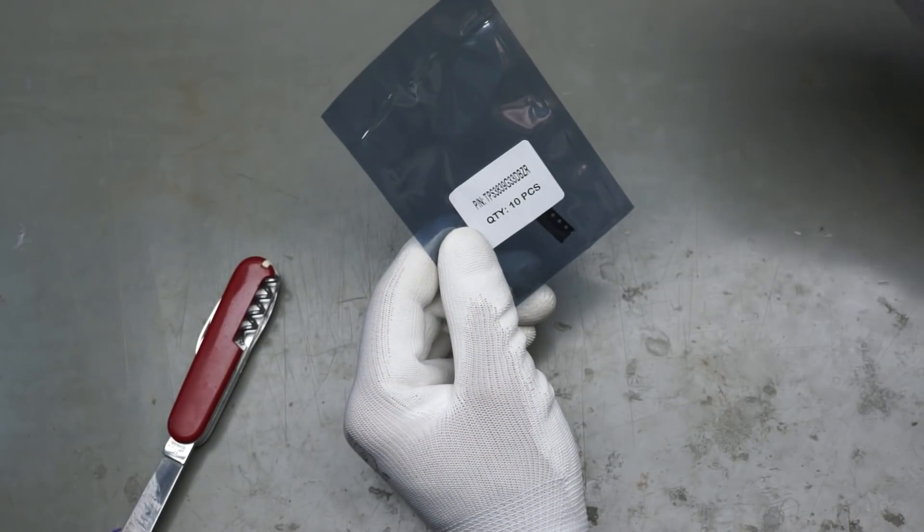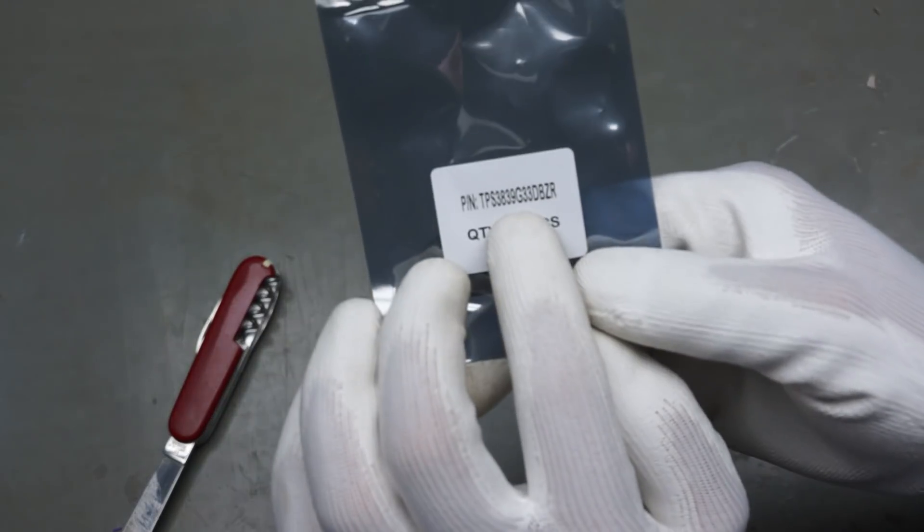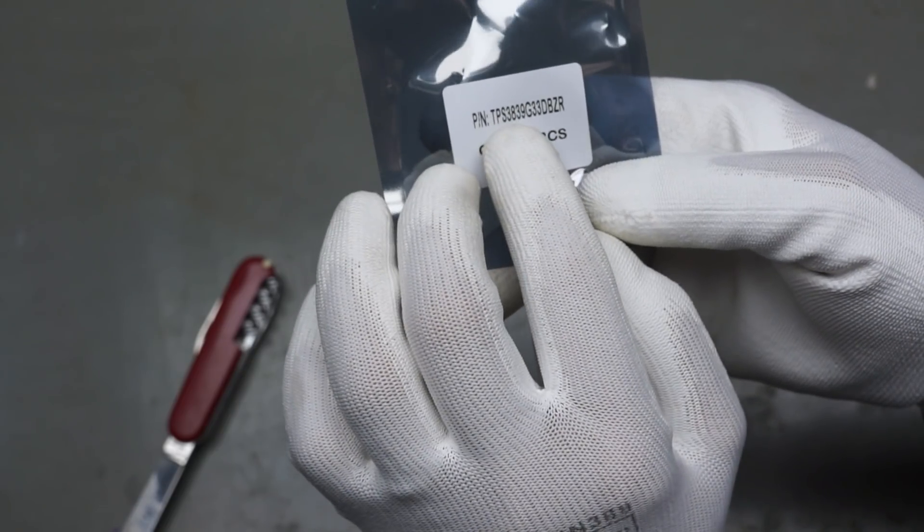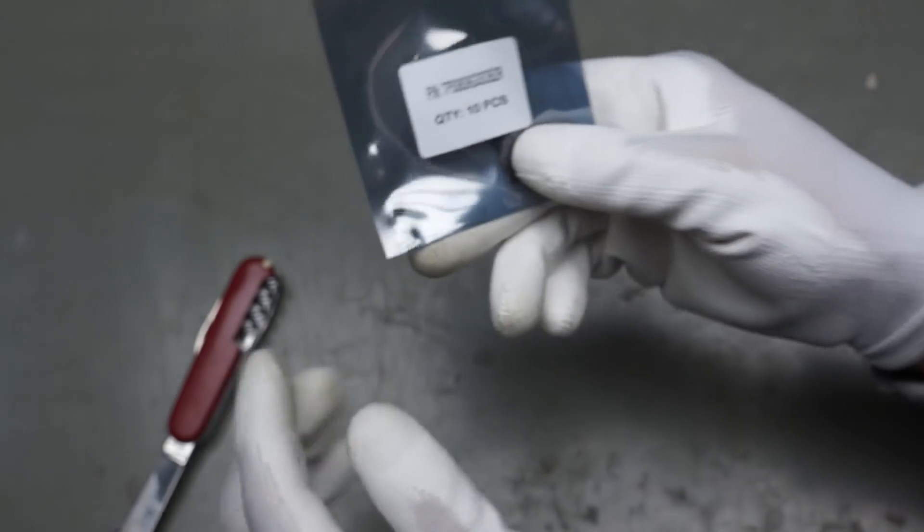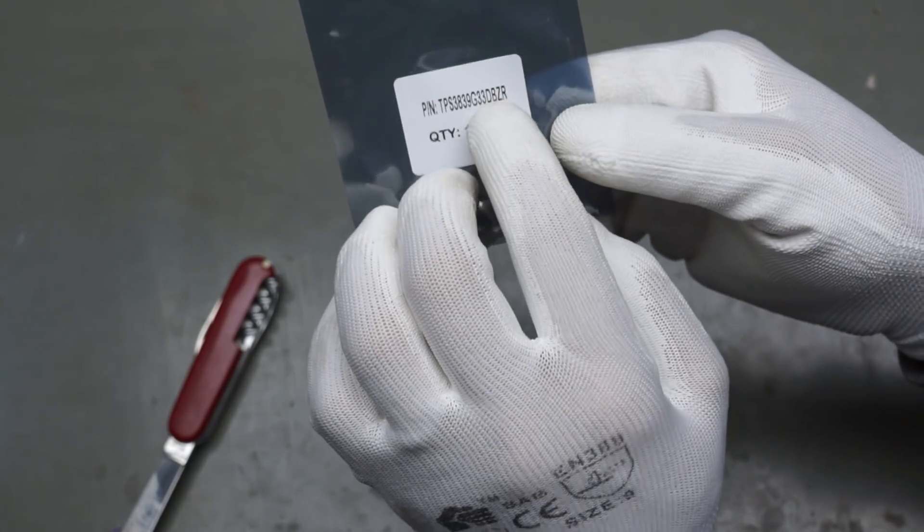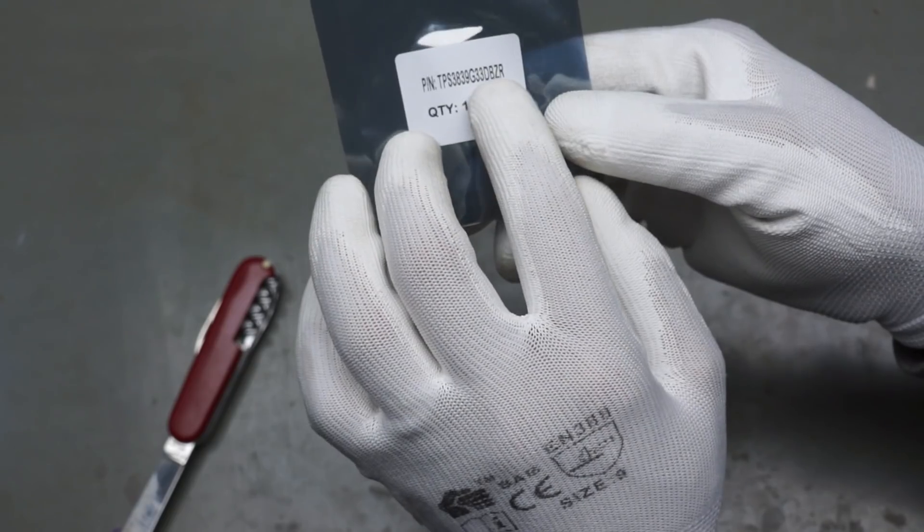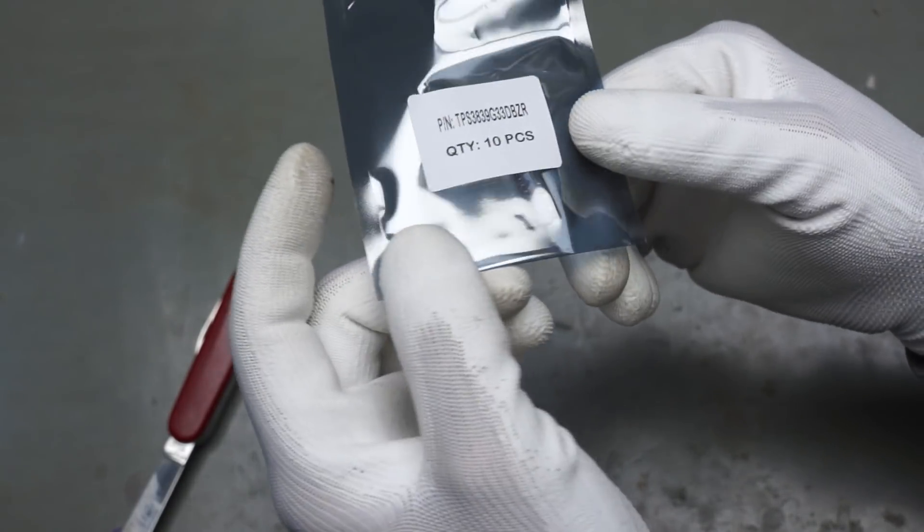Huge package, not a lot of content. It is 10 pieces of TPS3839G33. 33 is probably something with 3.3 volts. Maybe this is a power regulator. Let's check.